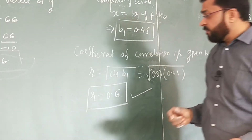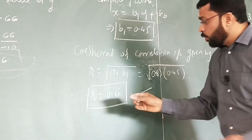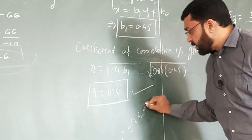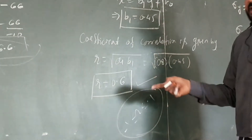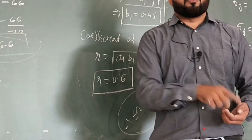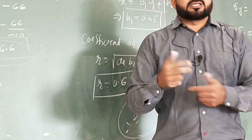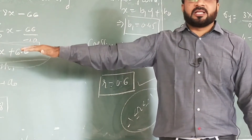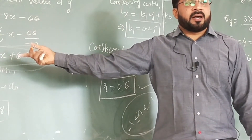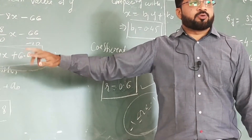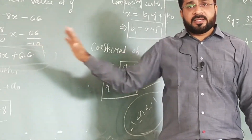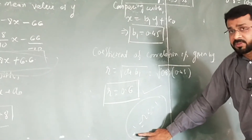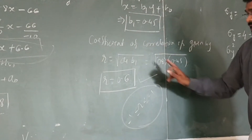One important check: if the value of r does not lie between minus 1 and plus 1, it means you have chosen the regression lines incorrectly, and you need to interchange them — what you took as y-on-x should be taken as x-on-y and vice versa. If r does lie between minus 1 and plus 1, then your choice is correct.